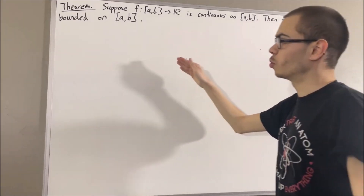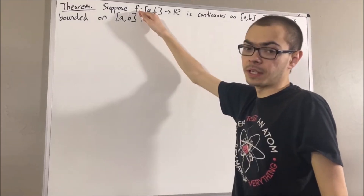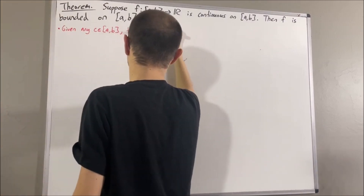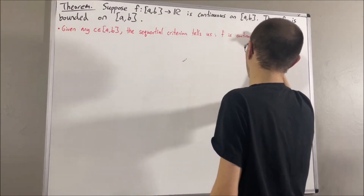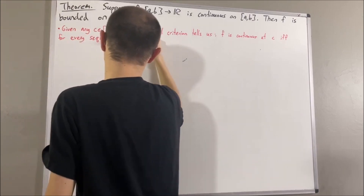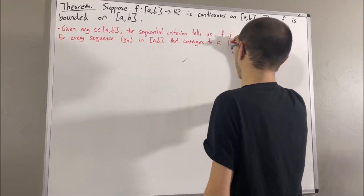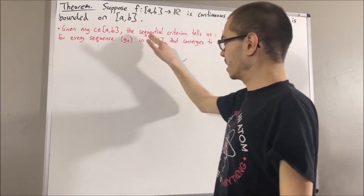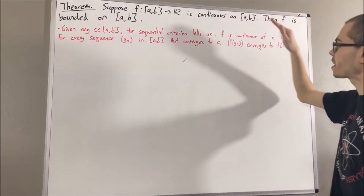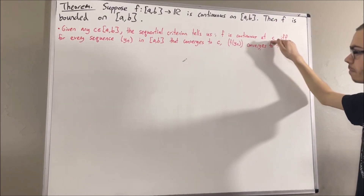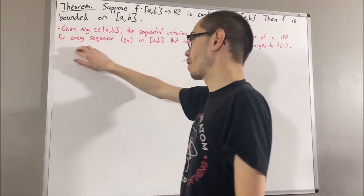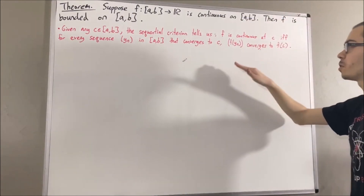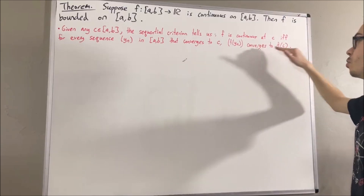In regards to our function f, the sequential criterion tells us the following. Given c is any element of a, b, the sequential criterion tells us that f is continuous at c if and only if, for every sequence yn in a, b that converges to c, it follows that the sequence f(yn) converges to f(c).